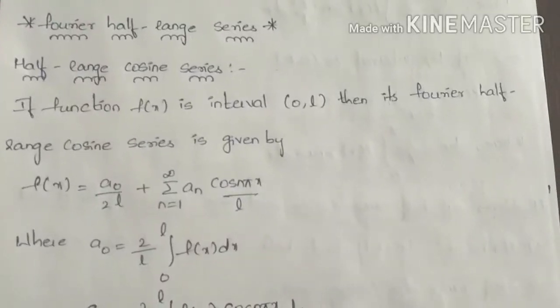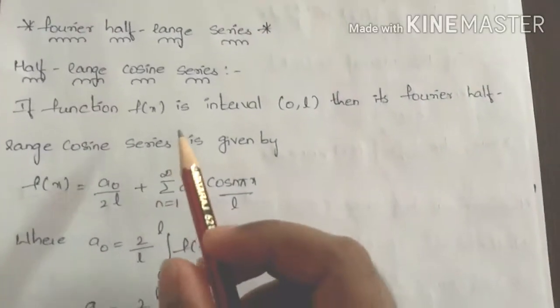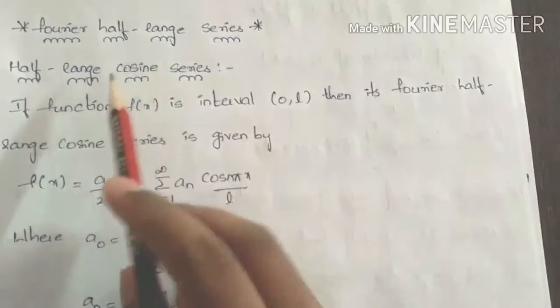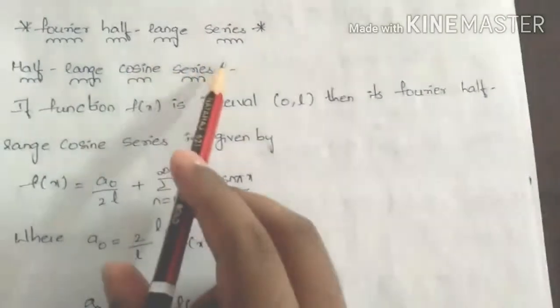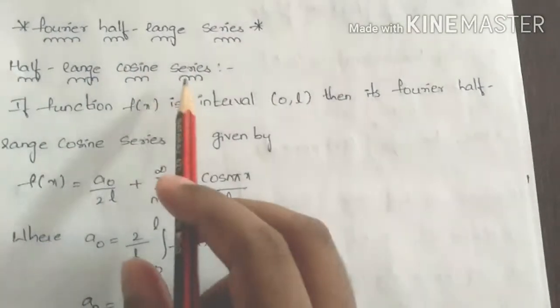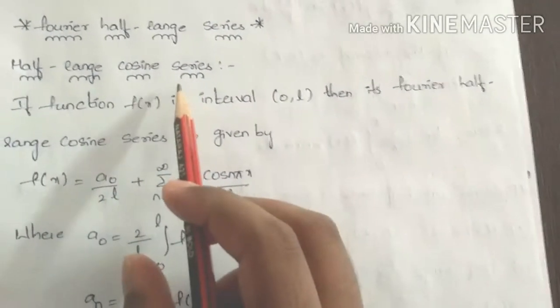Hi friends, my topic is Fourier half range series. This half range series covers half range cosine series and half range sine series.